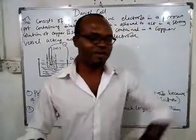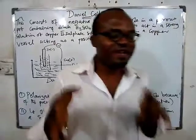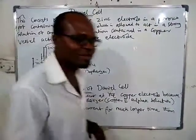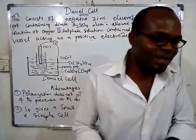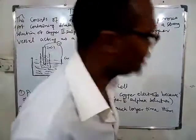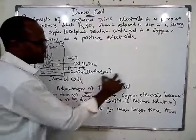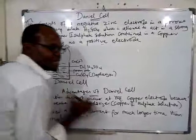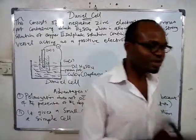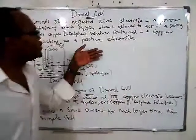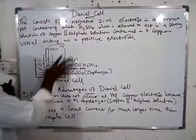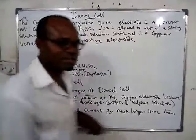Advantage number two: the Daniel cell gives more current for a much longer time than the simple cell. If there is polarization, the battery will stop working quickly. But here, because there is a depolarizer and no polarization, the battery lasts for a longer time. Comparing this to the simple cell, the Daniel cell has an advantage because of the copper(II) sulfate depolarizer. The two defects of the simple cell are polarization and local action, but in the Daniel cell, polarization is already prevented by the copper(II) sulfate depolarizer.